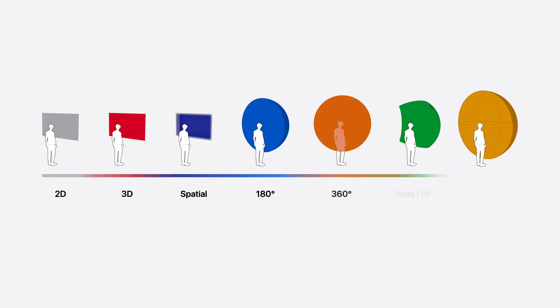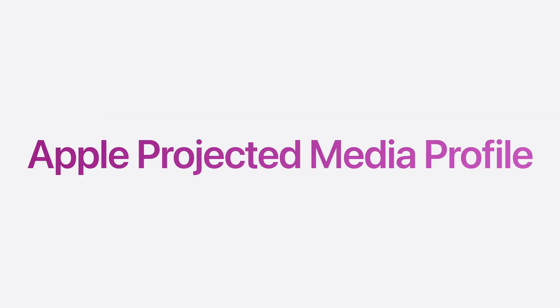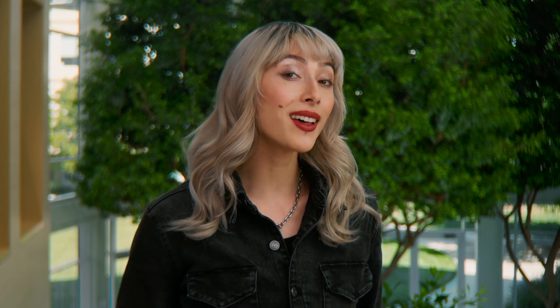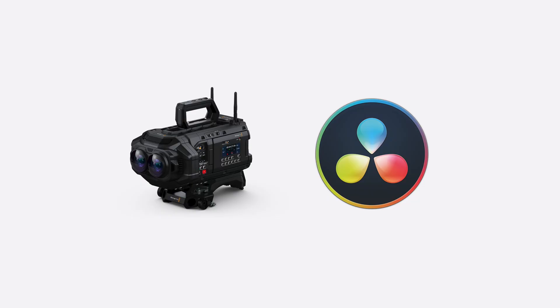If you are building media applications, you can play and distribute even more types of immersive content, with built-in support for 180-degree, 360-degree, and wide-field-of-view video through Apple Projected Media Profile, or APMP. You can play and stream these new immersive media formats inside your app using familiar AVKit, RealityKit, WebKit, and QuickLook APIs.